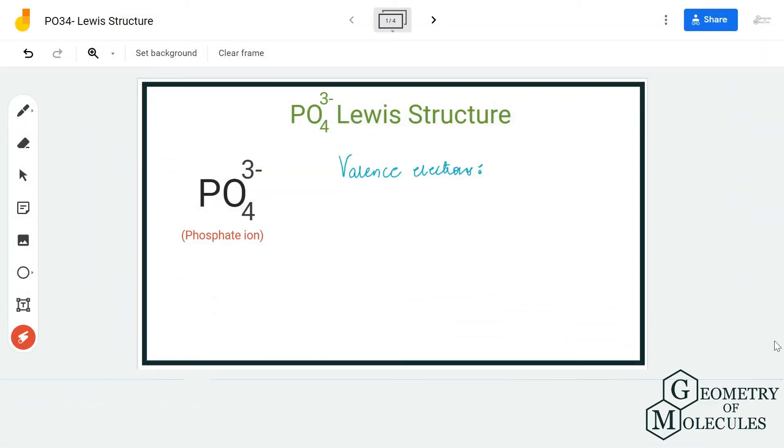Hi guys, welcome back to our channel. In today's video, we are going to help you determine the Lewis structure for PO₄³⁻ ion. It has a chemical name of phosphate ion. To determine its Lewis structure, we are first going to find out the total number of valence electrons for this molecule.